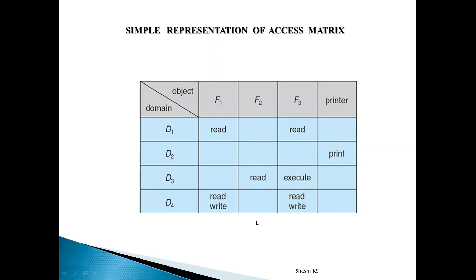The rows of the access matrix consist of domains and the columns consist of objects. Every entry in the access matrix consists of the access rights, which are the operations that can be performed. This is the simple representation of access matrix.